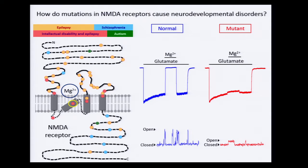The NMDA receptor sends signals by allowing ions to flow into brain cells, but it's a very unusual ion channel. Its activation requires not just the binding of its neurochemical, but also a rise in voltage inside the brain cell. This is because normally the receptor pore is blocked by positively charged magnesium ions, which are only expelled when the brain cell is also positively charged. This requirement for not just A or B, but A and B means that the receptor can link two inputs and means that we can form memories.